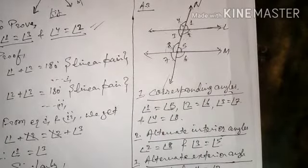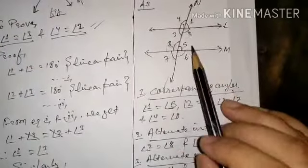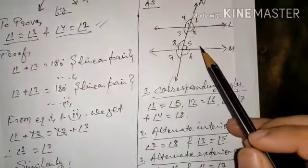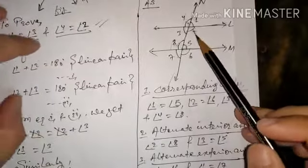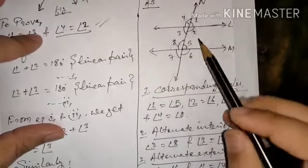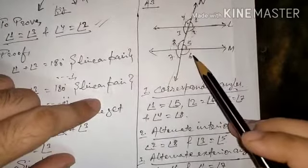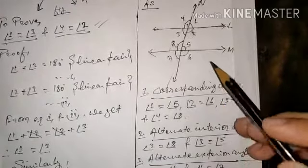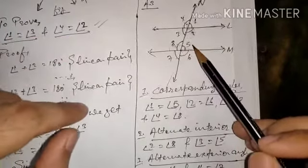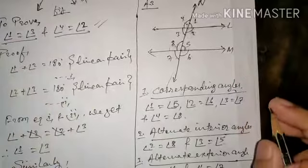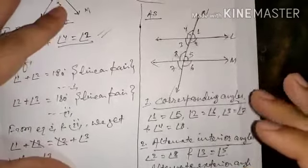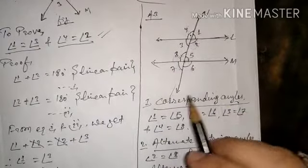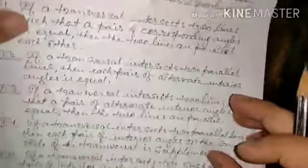Theorem 5 (converse): if angle 2 plus angle 5 equals 180 degrees (co-interior angles given), then L is parallel to M. We use: angle 1 plus angle 2 equals 180 degrees (linear pair) and angle 2 plus angle 5 equals 180 degrees (given). Since both RHS are equal, angle 1 plus angle 2 equals angle 2 plus angle 5, so angle 1 equals angle 5. These form a corresponding angle pair, and by the converse of the corresponding angle axiom, L is parallel to M.